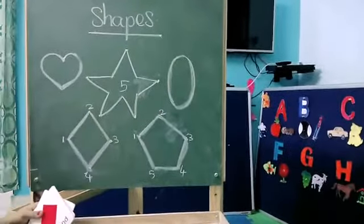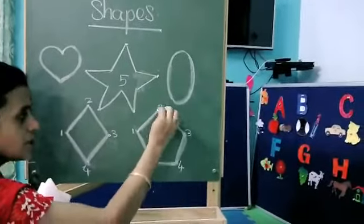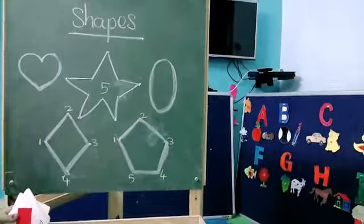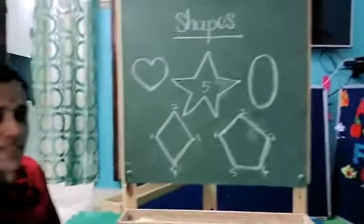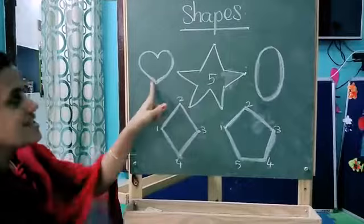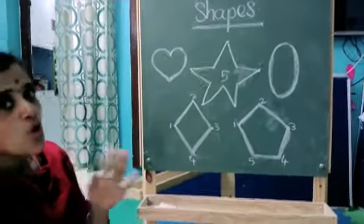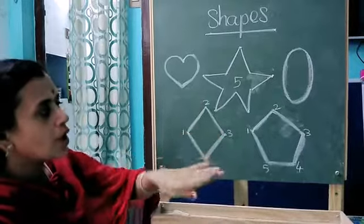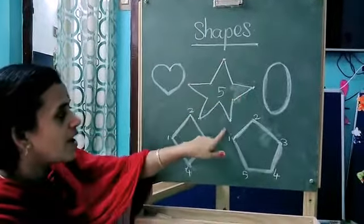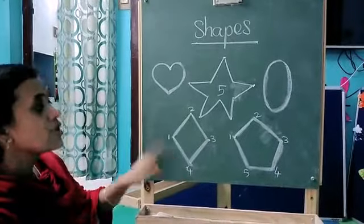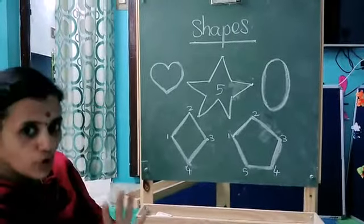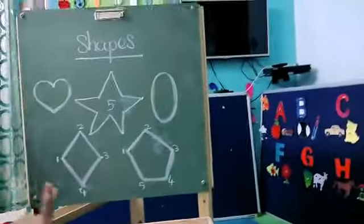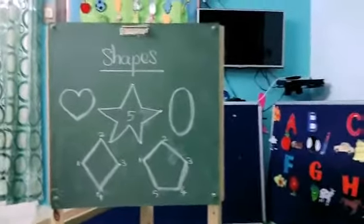Next, how many sides for pentagon? One, two, three, four, five. Okay kids, can you understand? So heart and oval have no sides and no corners. But star has only corners — one, two, three, four, five. Diamond has four sides and four corners. Next, pentagon also has five sides and five corners.